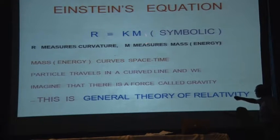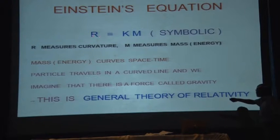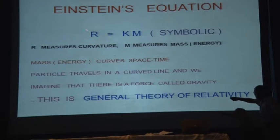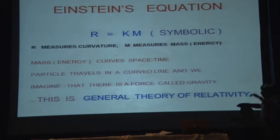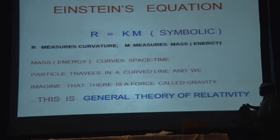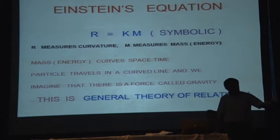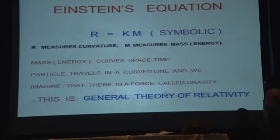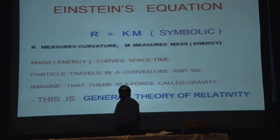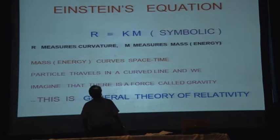If you put mass, this constant means space will be curved. If mass is zero, space will not be curved. Mass and energy curve space-time. If curvature R is zero, mass-energy T is zero. A particle travels in a curved line; we imagine there is a force — but it is our imagination, there is no such force. This subject, 100 years ago in 1915, is called the General Theory of Relativity.